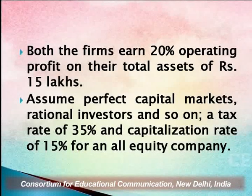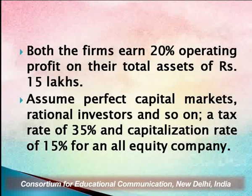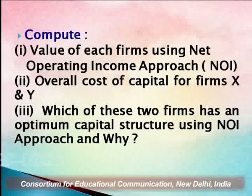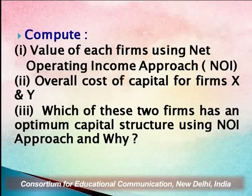The levered firm has rupees 9 lakh debentures carrying 10 percent rate of interest. Both firms earn 20 percent operating profit on their total assets of rupees 15 lakhs. A tax rate of 35 percent and capitalization rate of 15 percent for an all-equity company are given. We are required to calculate the value of each firm using the NOI approach, the overall cost of capital, and determine which firm has an optimum capital structure.